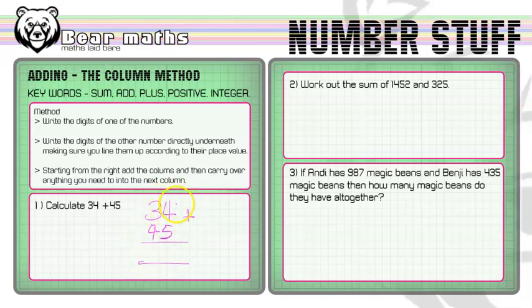Then I'll draw the lines for the answer space and add four and five together. That gives me nine. Then I add three and four together, which gives me seven. So the final answer is 79.